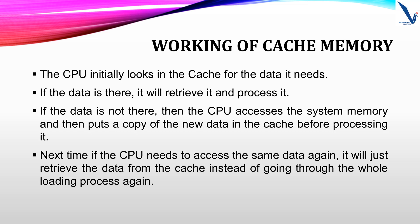I am going to explain how cache memory works and its role in improving the performance of the computer system. At the heart of every computer system, we have a CPU or central processing unit, which performs all the computations and executes the instructions. One of the key challenges faced by the CPU is the speed difference between the CPU itself and the main memory, which is relatively slow. This speed gap can create a performance bottleneck as the CPU needs to frequently access data and instructions from the memory. To overcome this challenge, we have cache memory — a small, high-speed memory located between the CPU and the main memory. Its purpose is to store frequently accessed data and instructions, reducing the time it takes for the CPU to access them.